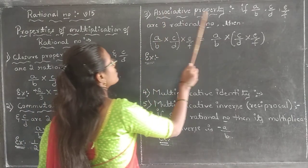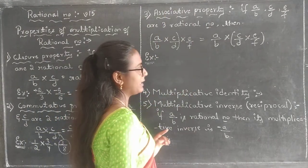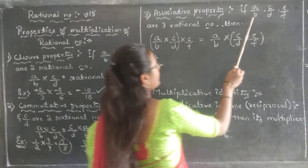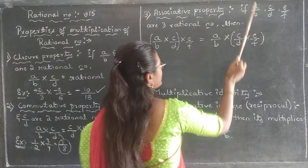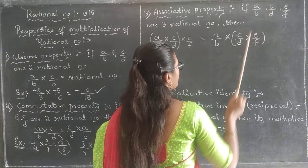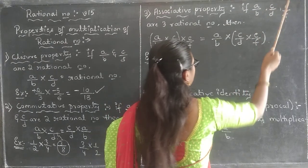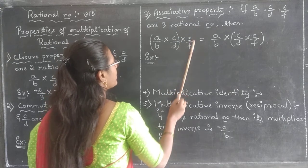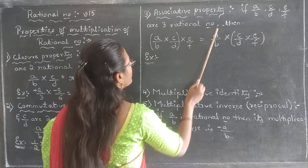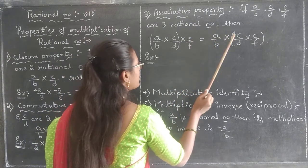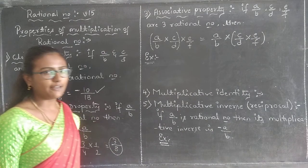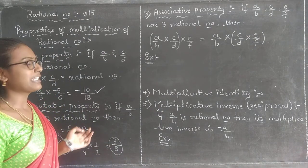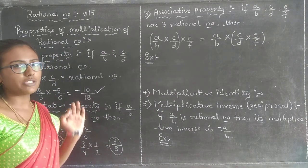The third property is associative property. What does associative property state? It states that if we take three rational numbers A/B, C/D and E/F, then A/B into (C/D into E/F) should be equal to (A/B into C/D) into E/F. Then we can say yes, multiplication of rational numbers satisfies the associative property.